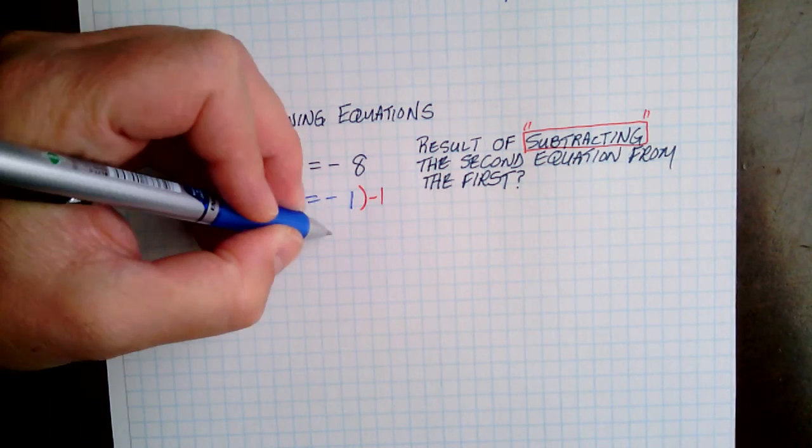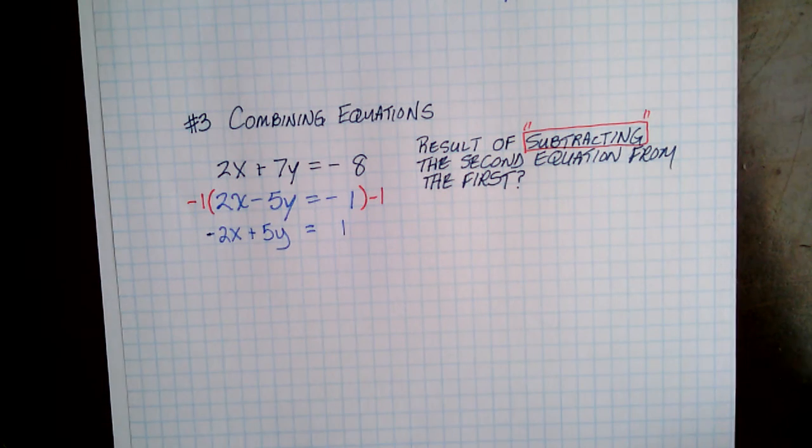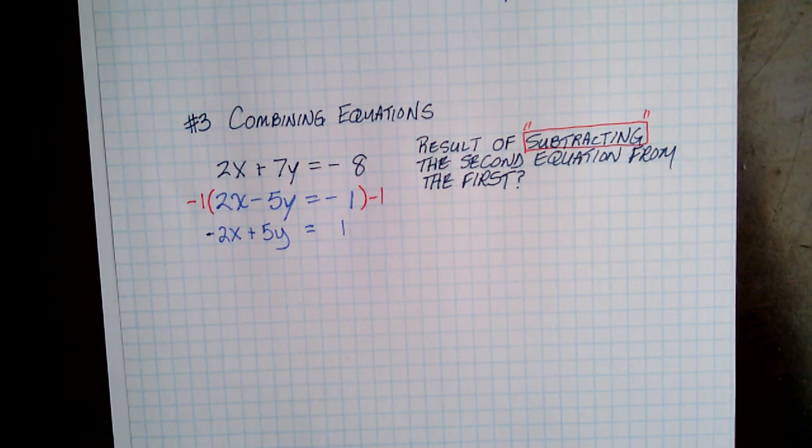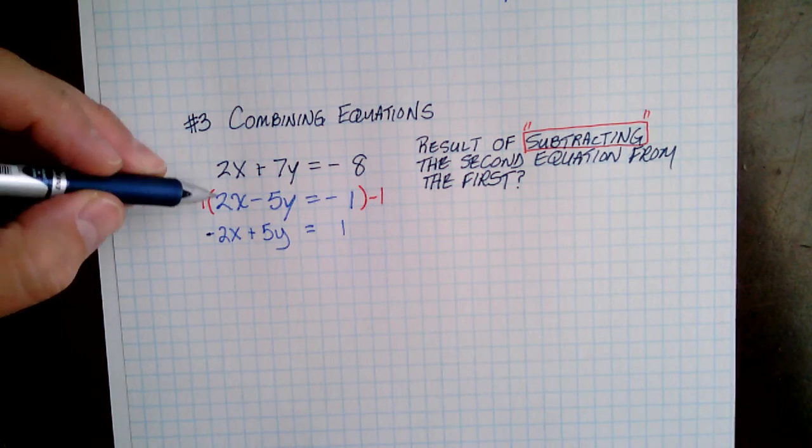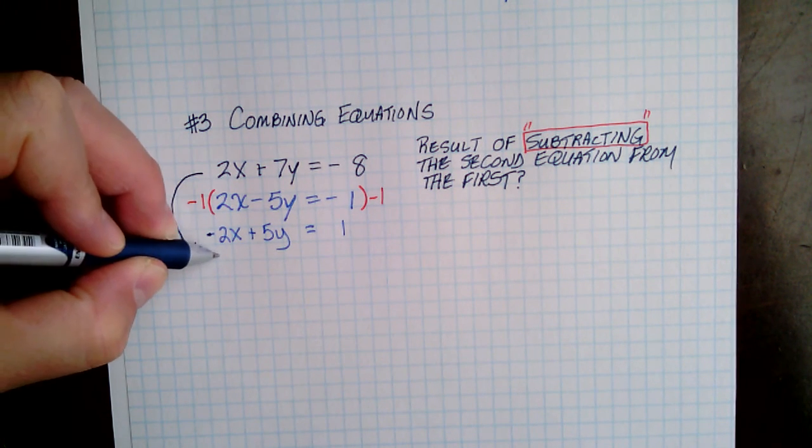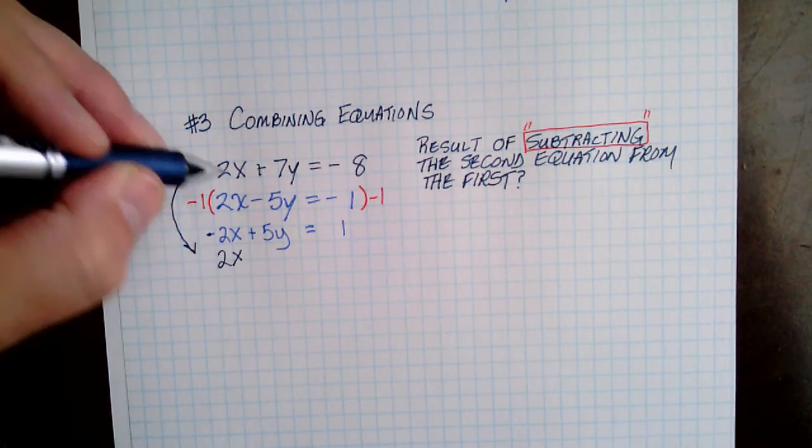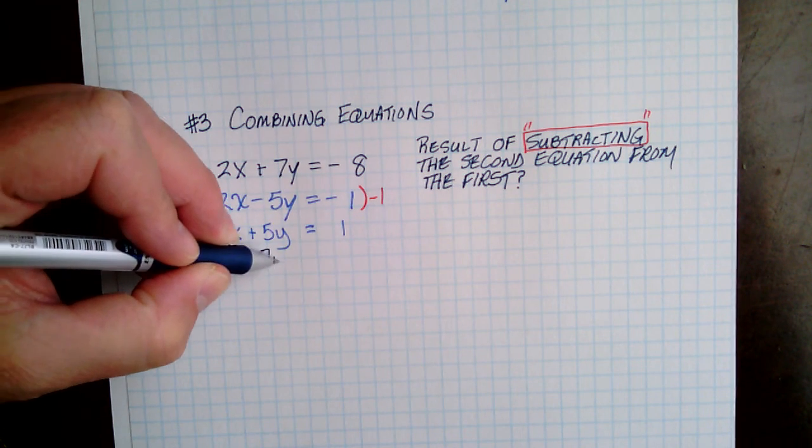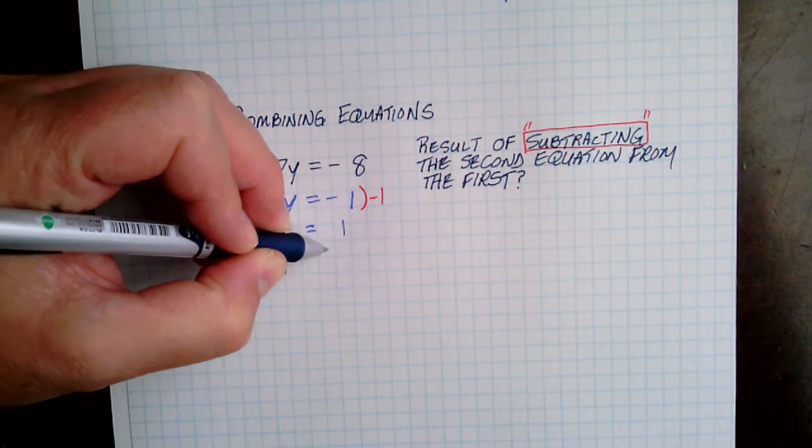Everything still lines up the same, but the signs change. So now I'm just going to bring this equation down and get my 2x and my 7y and still equals negative 8.